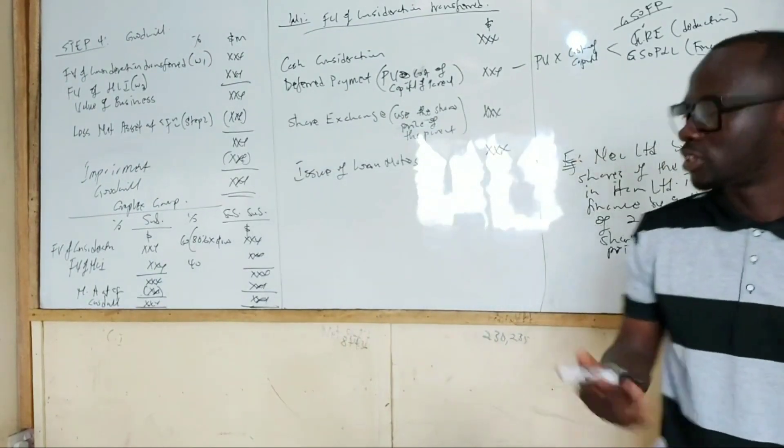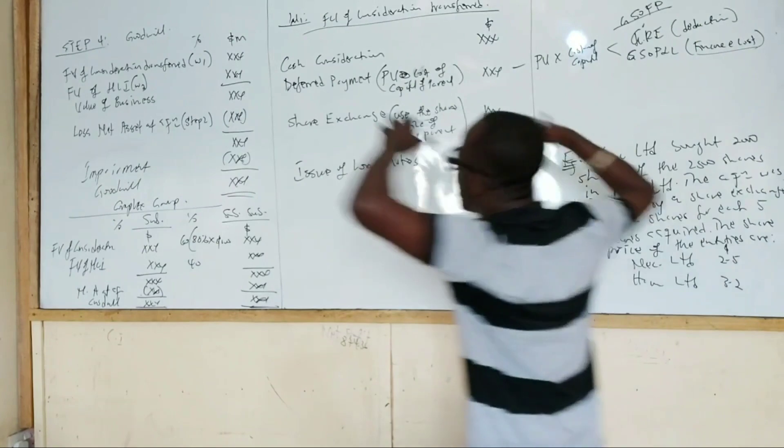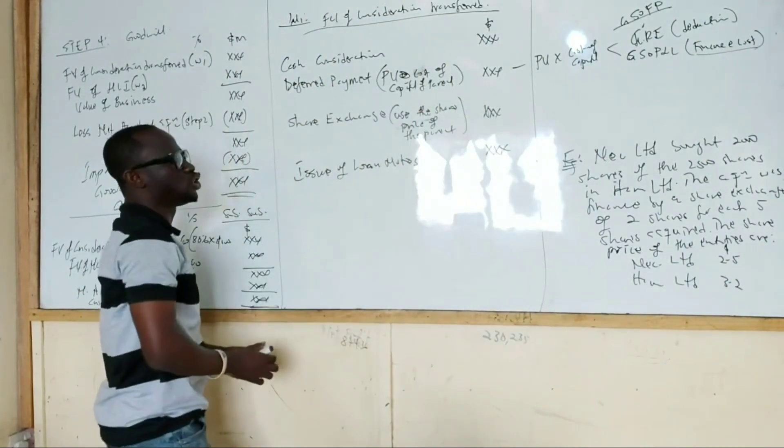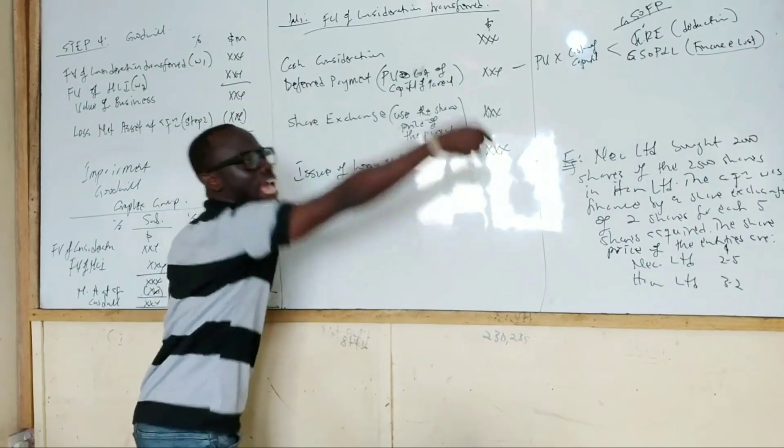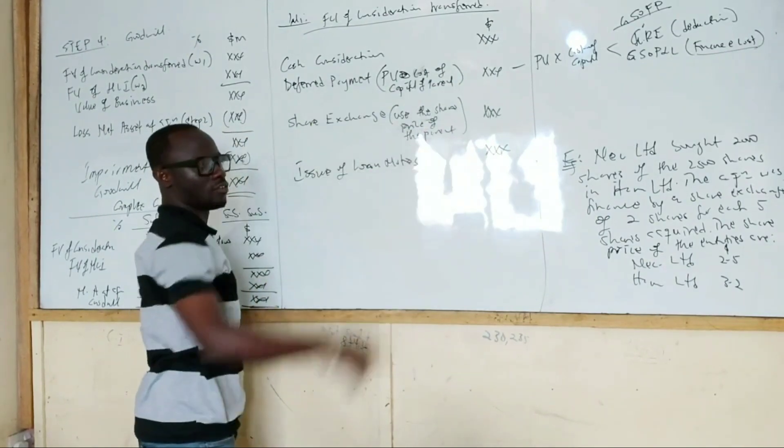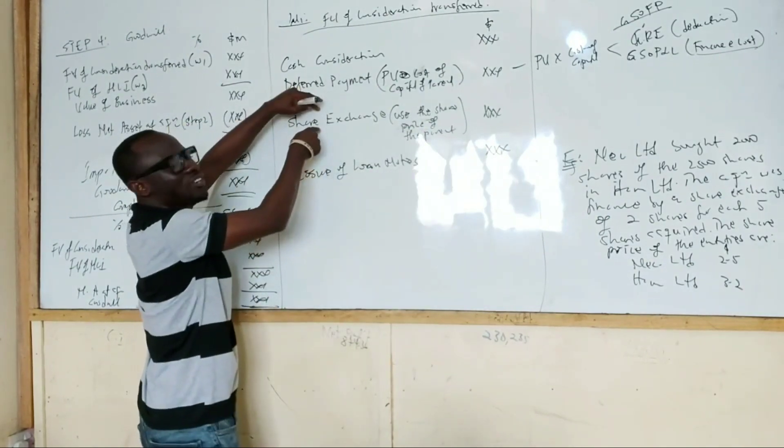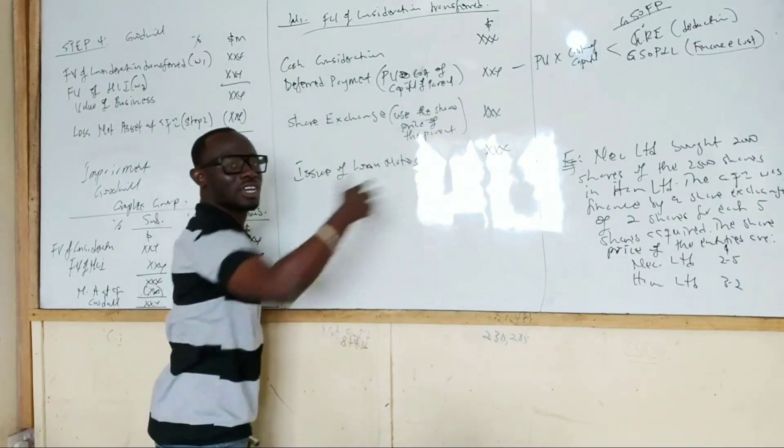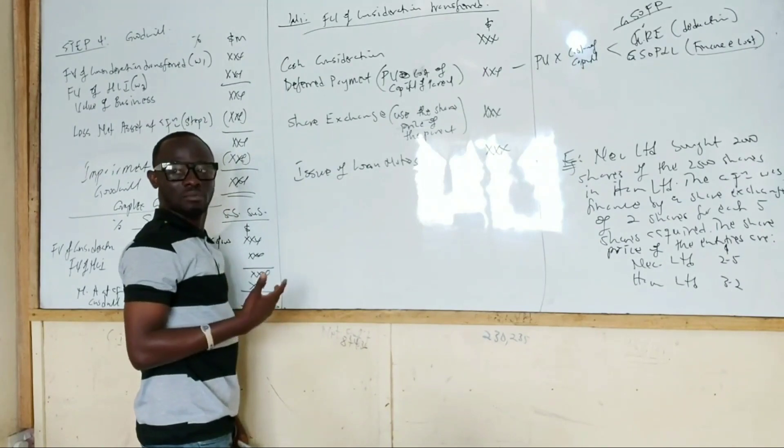So that is the four things. As part of the financing of the acquisition, the parent company can issue loan notes to the owners of the business. It is the opposite of share exchange. Instead of giving them ownership, they make them creditors of the parent company.